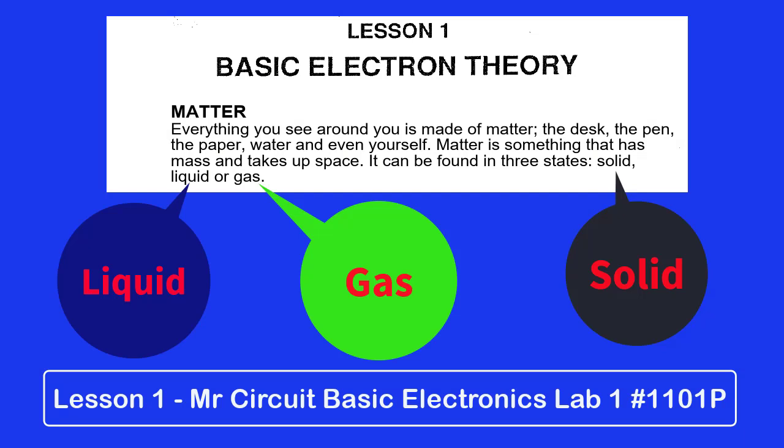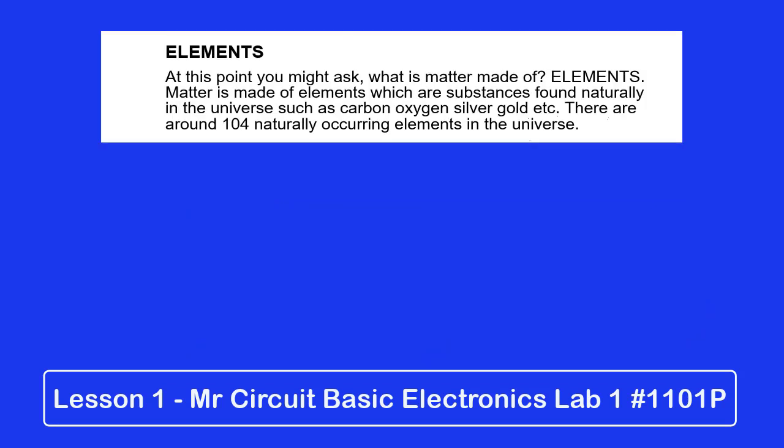At this point, you might ask, what is matter made of? Elements. Matter is made of elements, which are substances found naturally in the universe, such as carbon, oxygen, silver, gold, etc. There are around 104 naturally occurring elements in the universe.